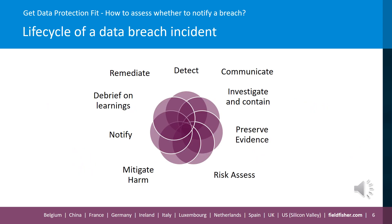We also wanted to recap on the key steps that generally arise in the lifecycle of any data breach incident. Assessing risk is one of those key steps. However, there is no one clear sequence or order that these steps should take. Typically, responding to a data breach involves juggling a number of different steps at once. A key takeaway is that while it's important to assess risk as early as possible, you also need information about the nature of the breach, and the more you know about aggravating or mitigating factors, the better position you'll be in to conduct a robust assessment.